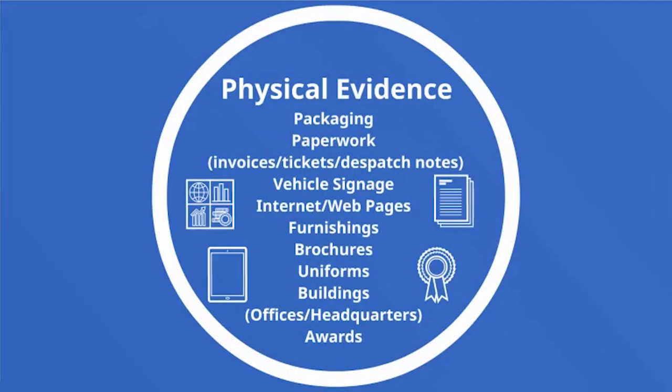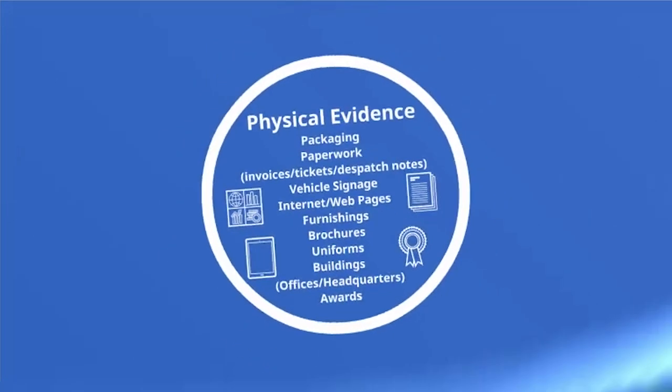Then we have physical evidence. This is all about the evidence that proves that your marketing is successful and that your product and service is definitely out there and doing what it should. This is about packaging, paperwork, things like invoices, tickets, dispatch notes. It's about vehicle signage, your presence on the internet such as web pages, furnishings, brochures, uniforms, buildings such as your offices or headquarters, and things such as awards that reflect the success of your product, service and brand.